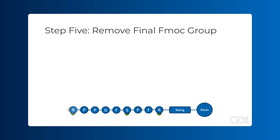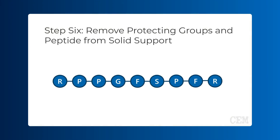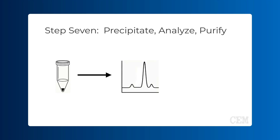Then the final Fmoc group is removed. The protocol for removing the peptide from the resin can depend on the specific linker being employed, but typically involves treatment with trifluoroacetic acid. This treatment also removes the side chain protecting groups. Once cleaved, the peptide is precipitated from solution, analyzed with LC-MS, and if required, purified on preparative HPLC.